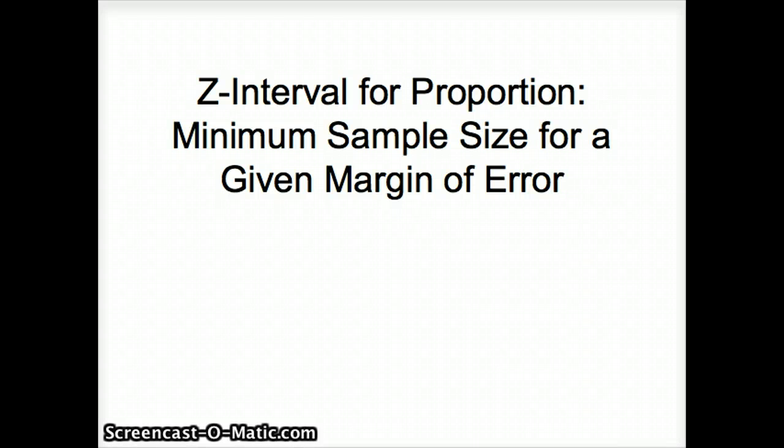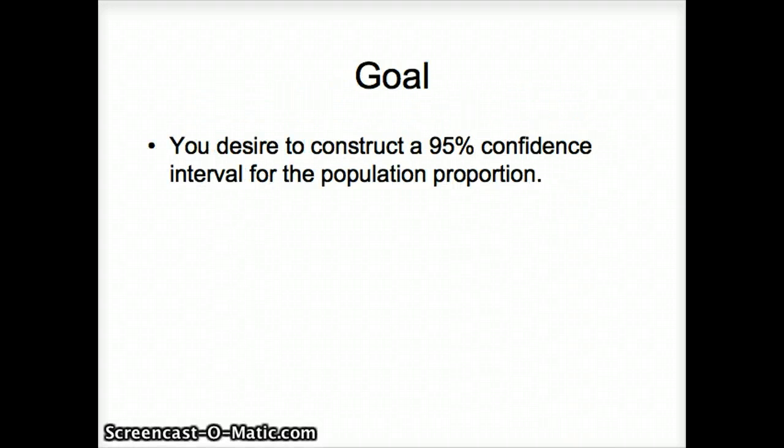This presentation examines the z interval for a proportion and the minimum sample size needed for a given margin of error. Here's our goal: We want to construct a 95% confidence interval for the population proportion.